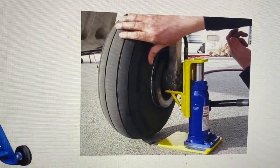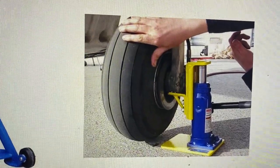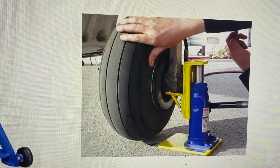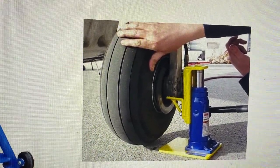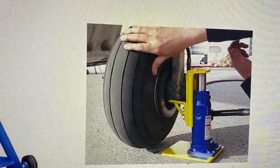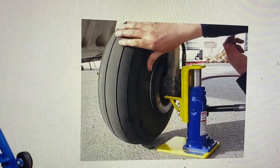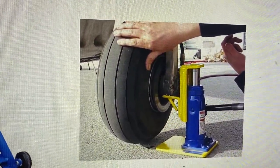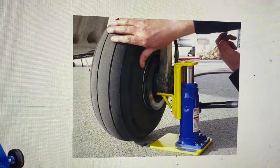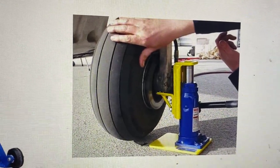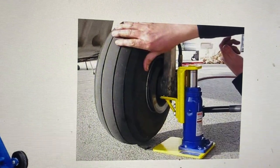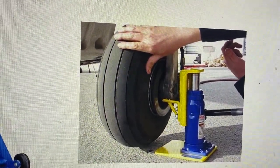You always want to, if you can help prevent it, jack in a closed hangar so you don't have issues with wind blowing the aircraft off the jacks. And you should put a rope around the aircraft, like a streamer, and label that the aircraft's on jacks. And that prevents somebody from not realizing it's on jacks and hooking a tow bar to it and trying to drive off with the aircraft without the wheel on there.